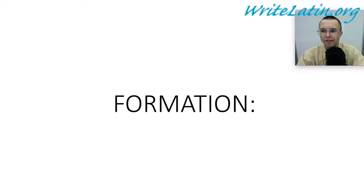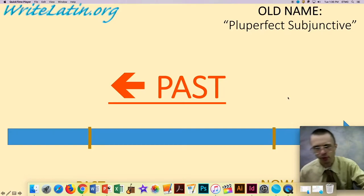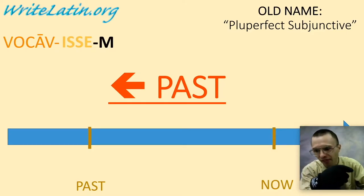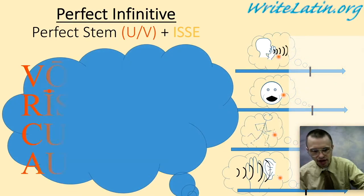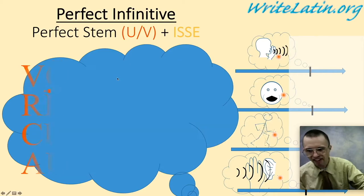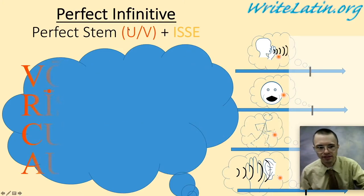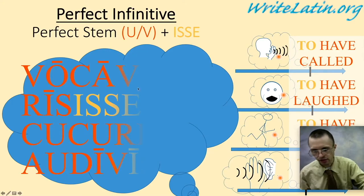We are now on to our fourth subjunctive tense: the past backward-looking, or by the old traditional name, the pluperfect subjunctive — which I think is really misleading. The way you make this one is you use the perfect infinitive — 'to have blanked,' vokawise — and add on an ending. The perfect infinitive is made by taking the third principal part, the perfect stem, and adding on an adulterated form of esse, which became isse — meaning 'to be in a state of having blanked.' So: to have called, to have laughed, to have run, and to have heard.